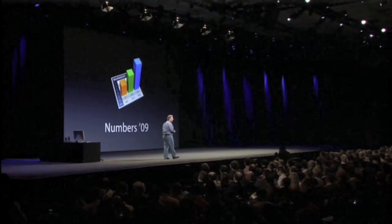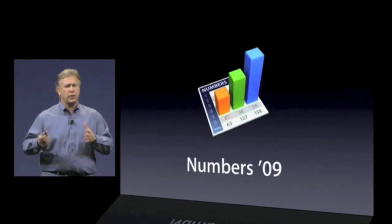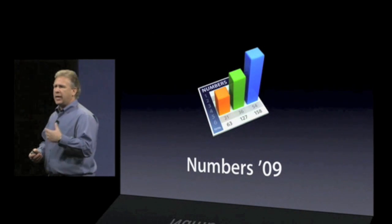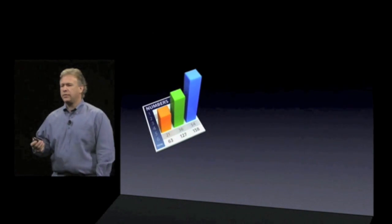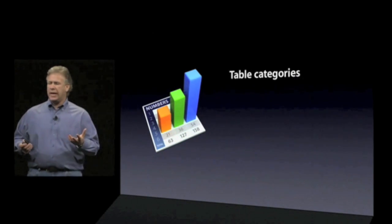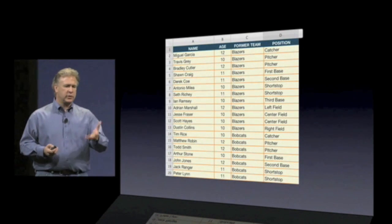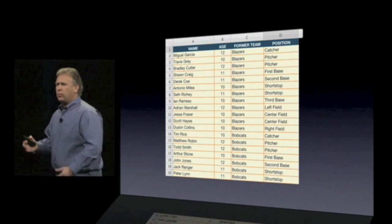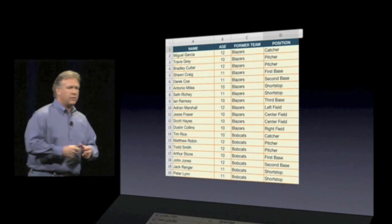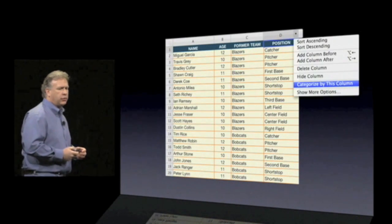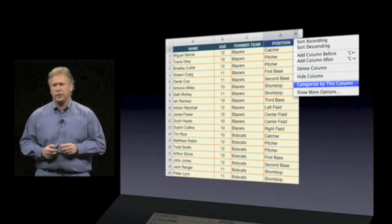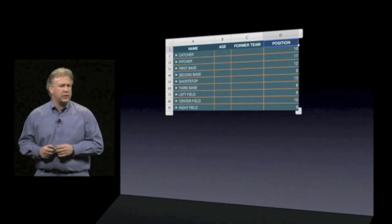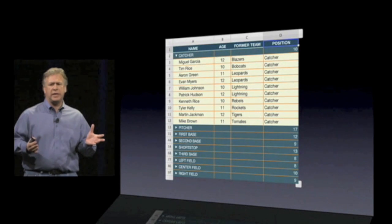The third product in iWork 09 is Numbers. Last year was version 1.0, and customers liked it because it was a fun, easy-to-use spreadsheet done the Apple way. This year we focused on filling out features customers asked for. For example, in Numbers 09 we've added table categories. A lot of data in spreadsheets is actually a table — for instance, a list of kids trying out for Little League with their names and positions. If you need to reorganize by position, you pull down on a column, choose the new 'Categorize by this column' option, add a subtotal, and you've automatically created a categorized table based on that column.